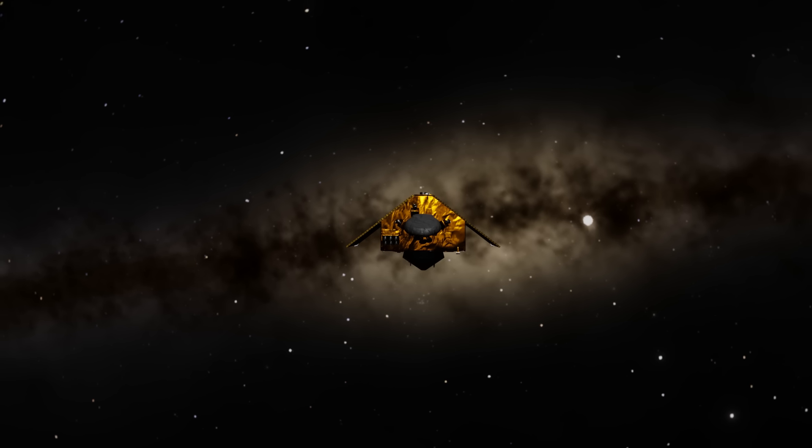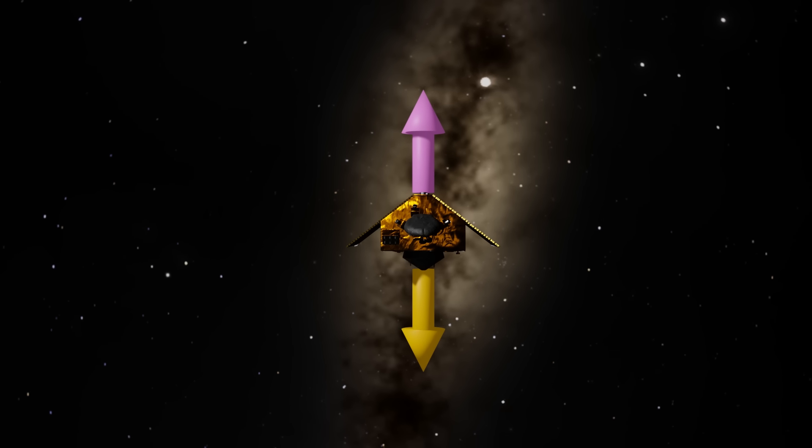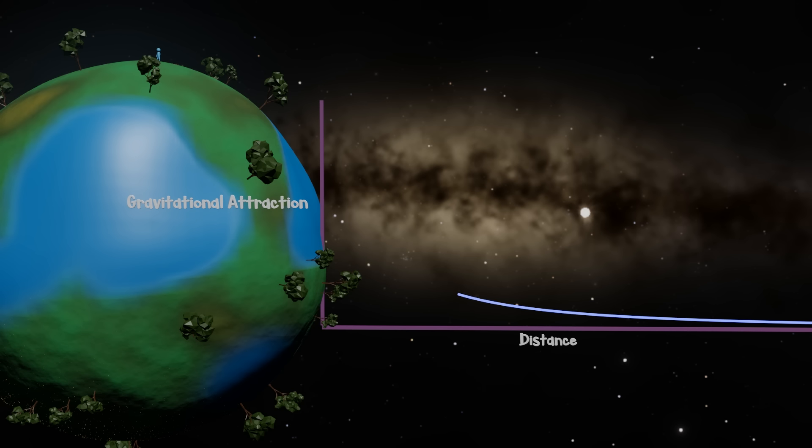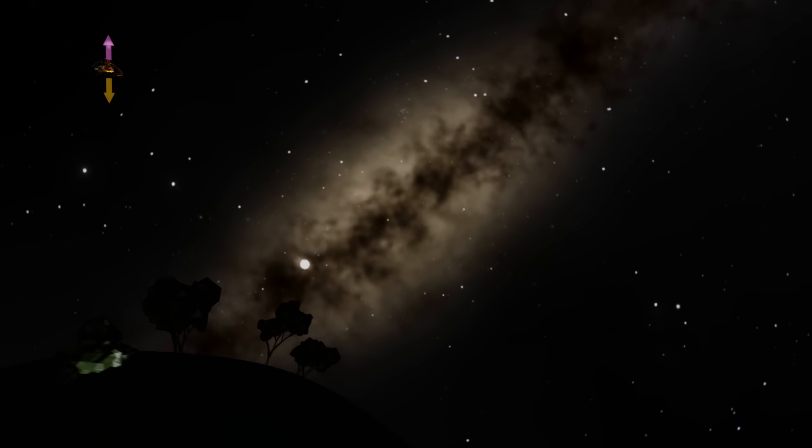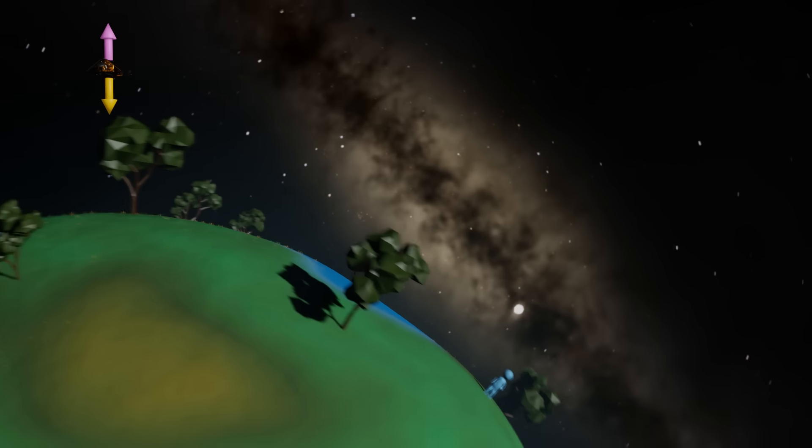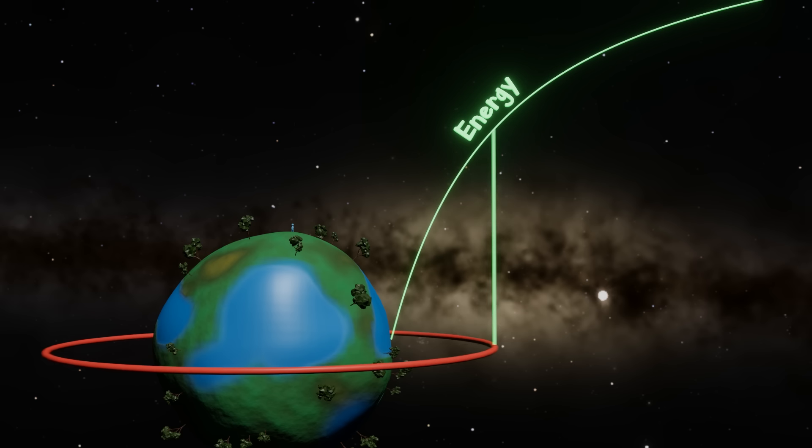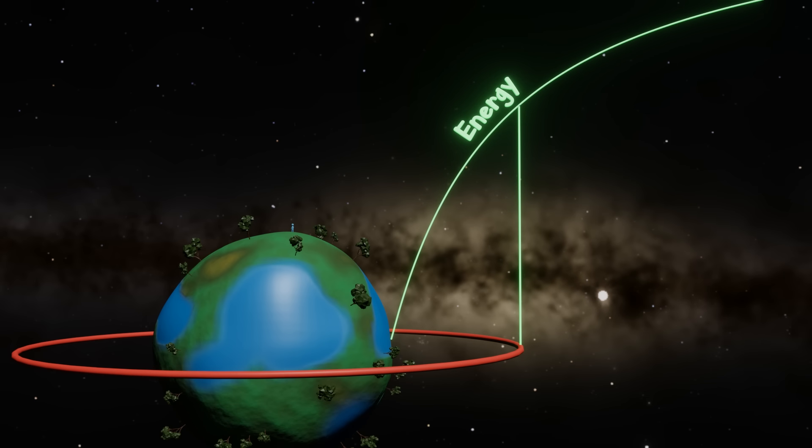Orbits occur when your centrifugal force counteracts the invisible hands pulling you down. The closer you get to a gravitational source, the stronger its gravity, which means you need to counteract this attraction with more extreme centrifugal force. Traditionally, this is accomplished with a smaller orbital circumference and faster orbital speed. Normally this is fairly easy to accomplish. Closer orbits have less energy, so you can just slow down a higher orbit and fall into the lower orbit.